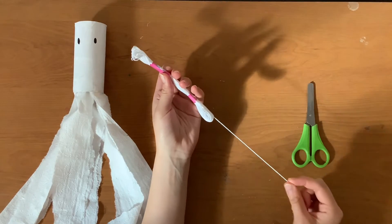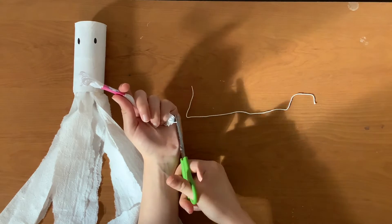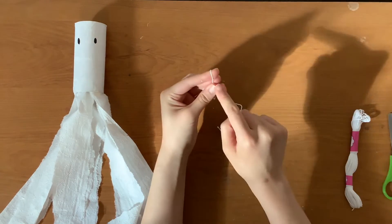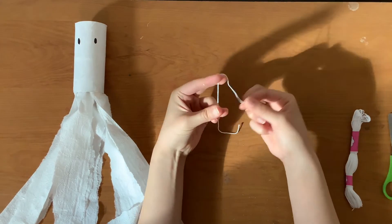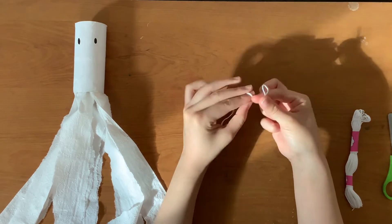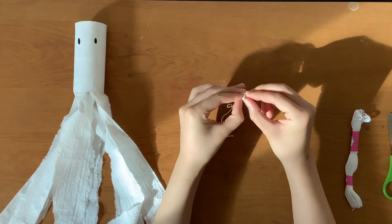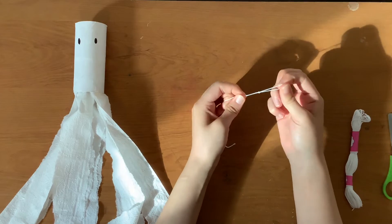For our last step we're going to be using our string. So cut a piece of string, it doesn't have to be too long, and on one end we will tie a loop onto the string. Make sure you pull it tight so that the knot doesn't come loose.